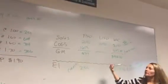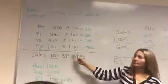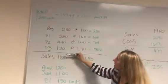With last in first out, we are going to assume our most recent or our last purchases we sold first, so we're going to work our way from the bottom up.